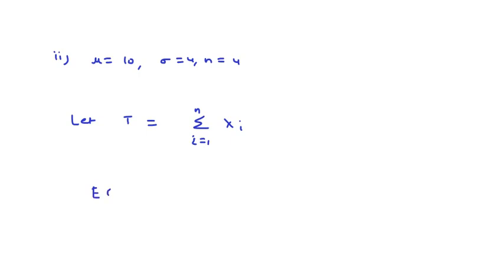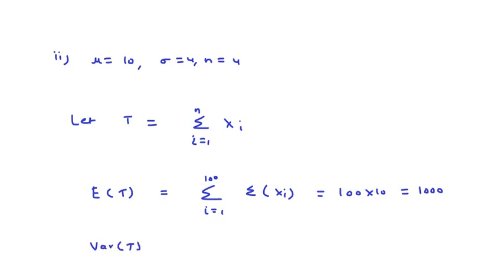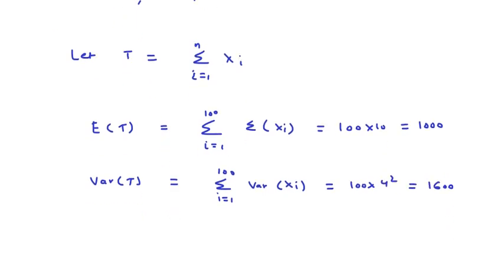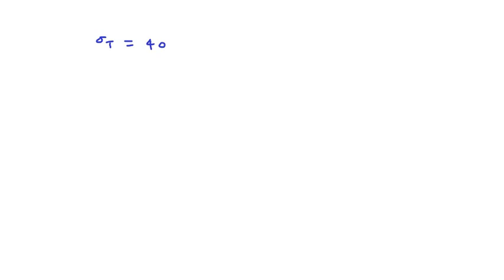The value of E[T] = Σ(i=1 to 100) E[Xᵢ] = 100 × 10 = 1000. Variance of T = Σ(i=1 to 100) Var(Xᵢ) = 100 × 4² = 1600. Therefore σ_T = 40.